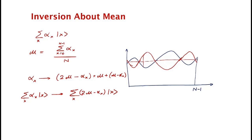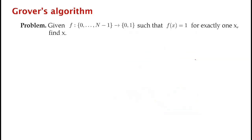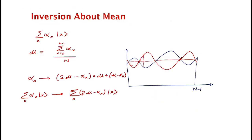It should not be a priori clear that inversion about the mean is a unitary transformation, let alone that it can be implemented efficiently. It might be clearer that phase inversion is a unitary operation. If you can guess how to implement it, that's great — we'll see how to do that in the next video.